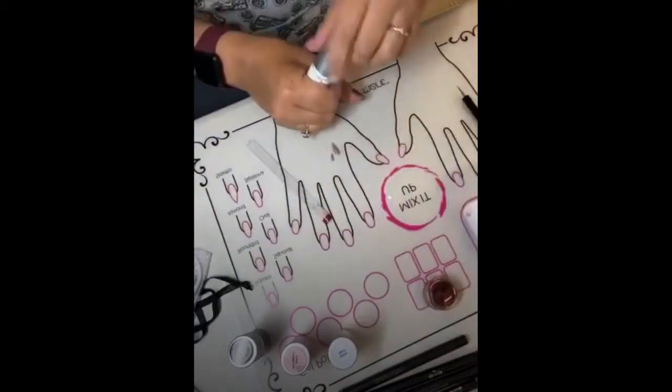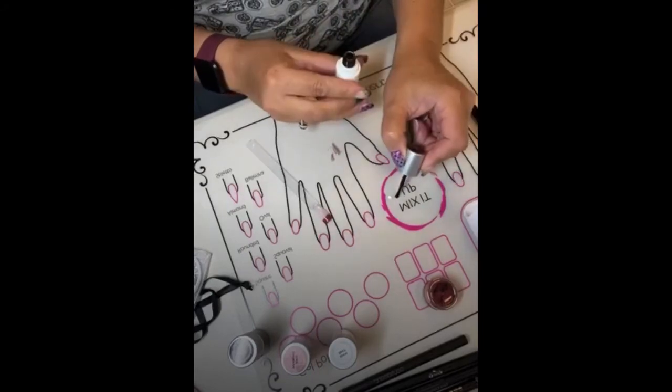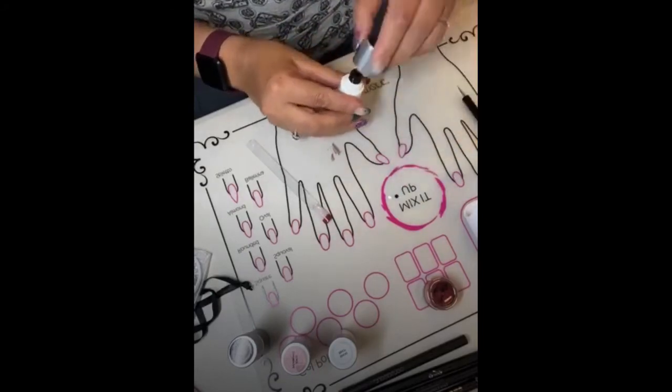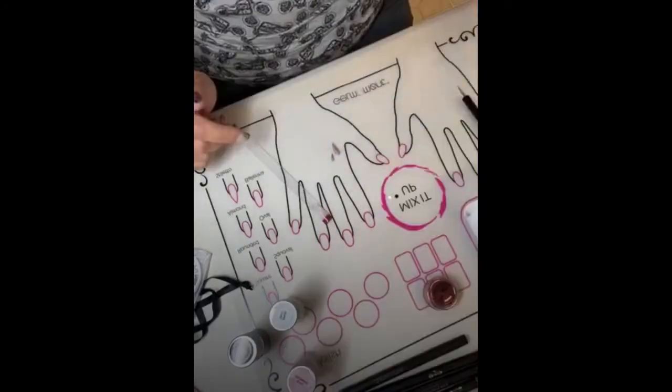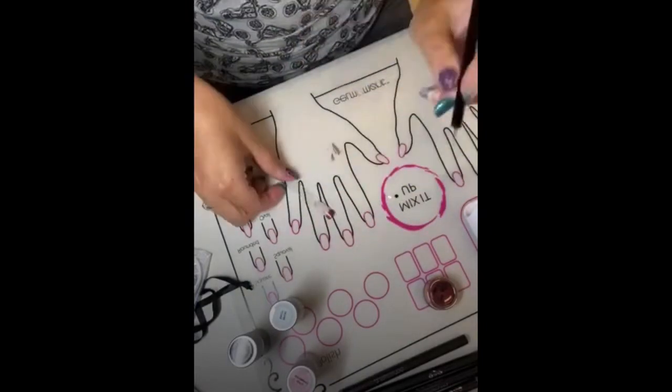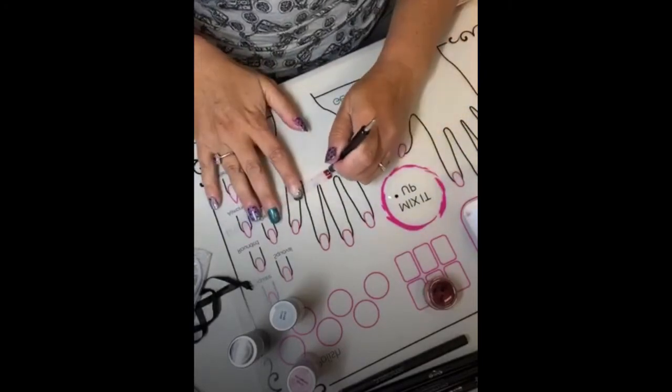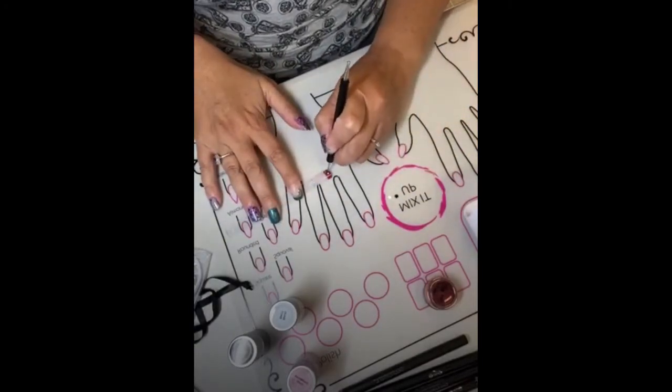And your Raven's Kiss for the black, which will be the Mickey head. Take your dotting tool, the smallest tip, put it in the Lovey Dovey, and then just make little small polka dots.